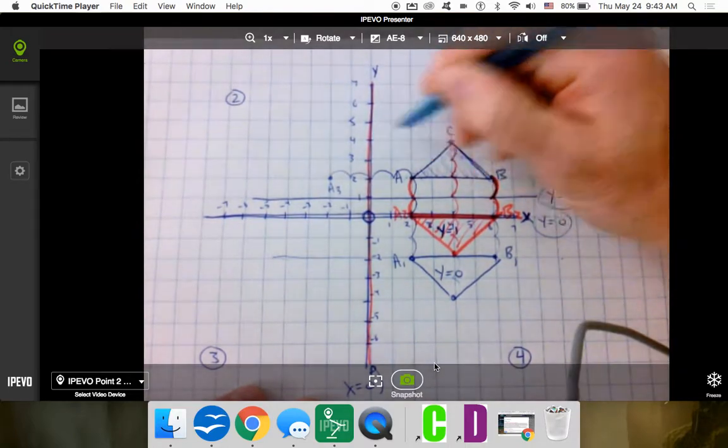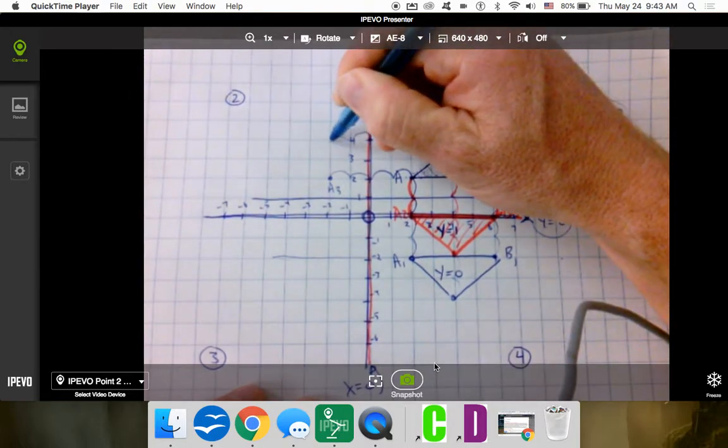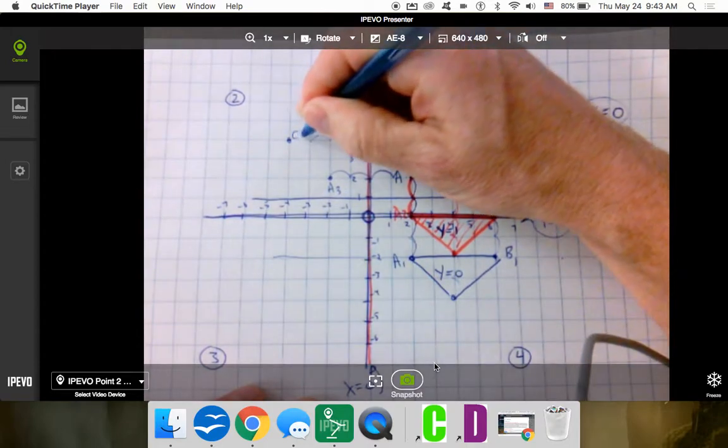And this becomes my new A3. Here, I have to do 1, 2, 3, 4 units. So I have to do 1, 2, 3, 4 on the other side. That becomes C3.